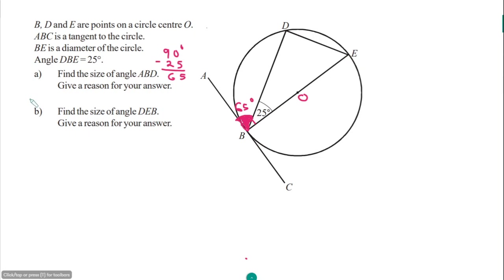Alternate segment problems: if the angle here is 64, then this alternate segment angle is also 64 degrees — alternate segments are equal. If here is 51, the corresponding angle is also 51 degrees. To find angle C, adding 51 and 63 gives 114, and subtracting from 180 gives angle C equals 66 degrees.